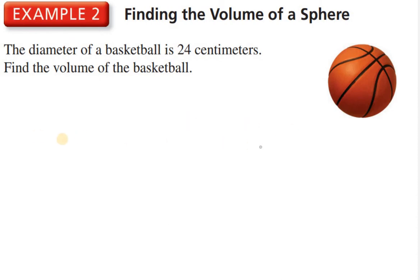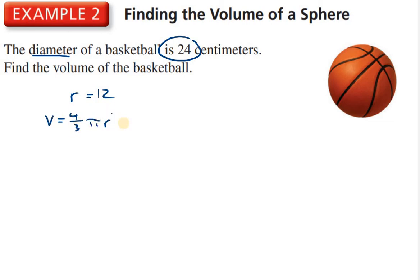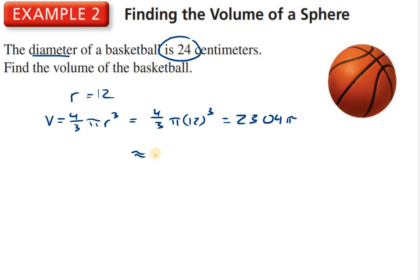Finding the volume of this sphere. This time, notice — they gave us the diameter. The diameter is 24, so first we have to find the radius. Radius is half the diameter, so the radius equals 12. Back to our formula: four thirds π r cubed. We insert the radius — four thirds π times 12 cubed. Type this into your calculator and you get 2304π, or approximately 7238.23 centimeters cubed.